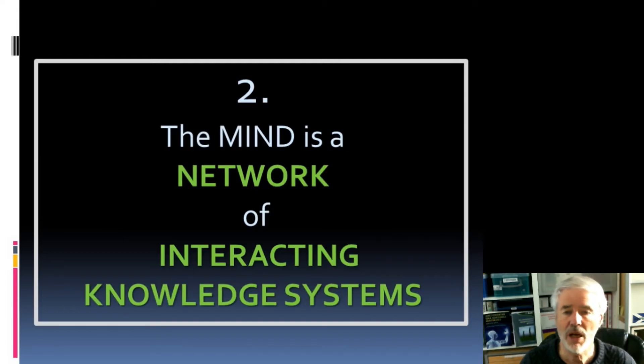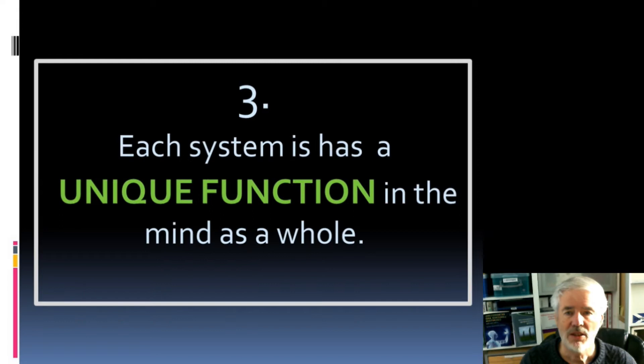We want to know how the mind is organized and it's organized as a set of systems. Each of these systems form a kind of network because they're interconnecting, they interact, and in each part of the mind in each of these systems we have a type of knowledge which is developed over your lifetime. Each system has a unique function not shared by any other system. It is a uniquely functionally specialized system.